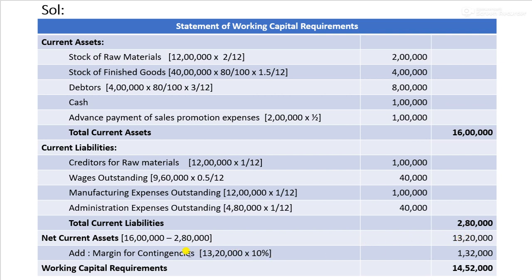Margin for contingencies is 10% of net current asset, which is 1 lakh 32,000. Adding this gives a total working capital requirement of 14 lakh 52,000. By studying these questions and answers, students will be able to answer similar questions.